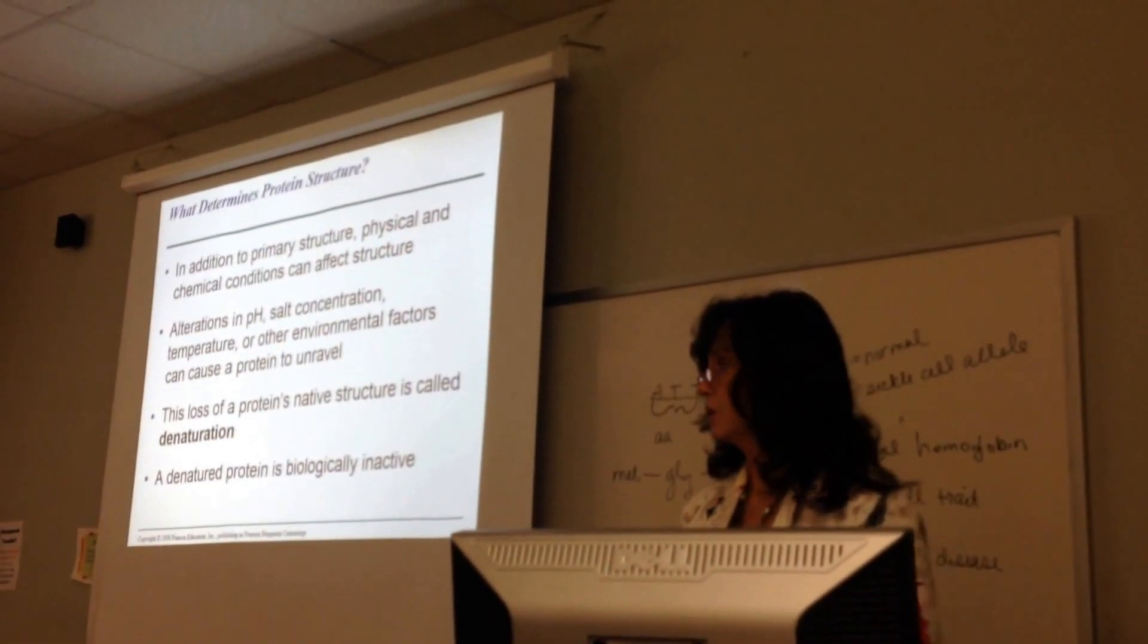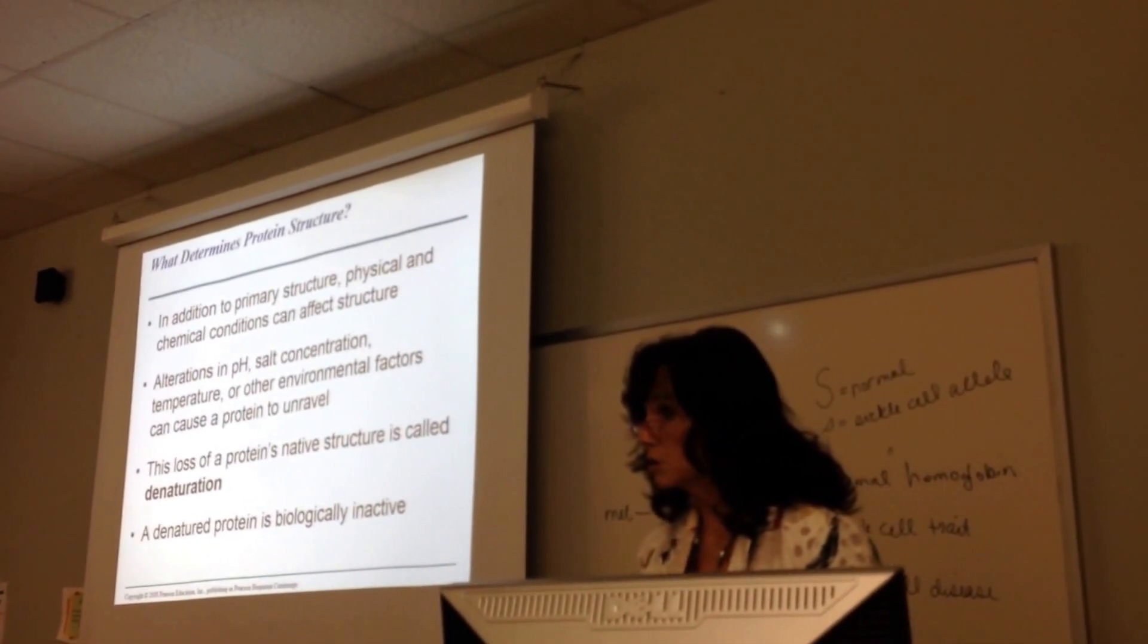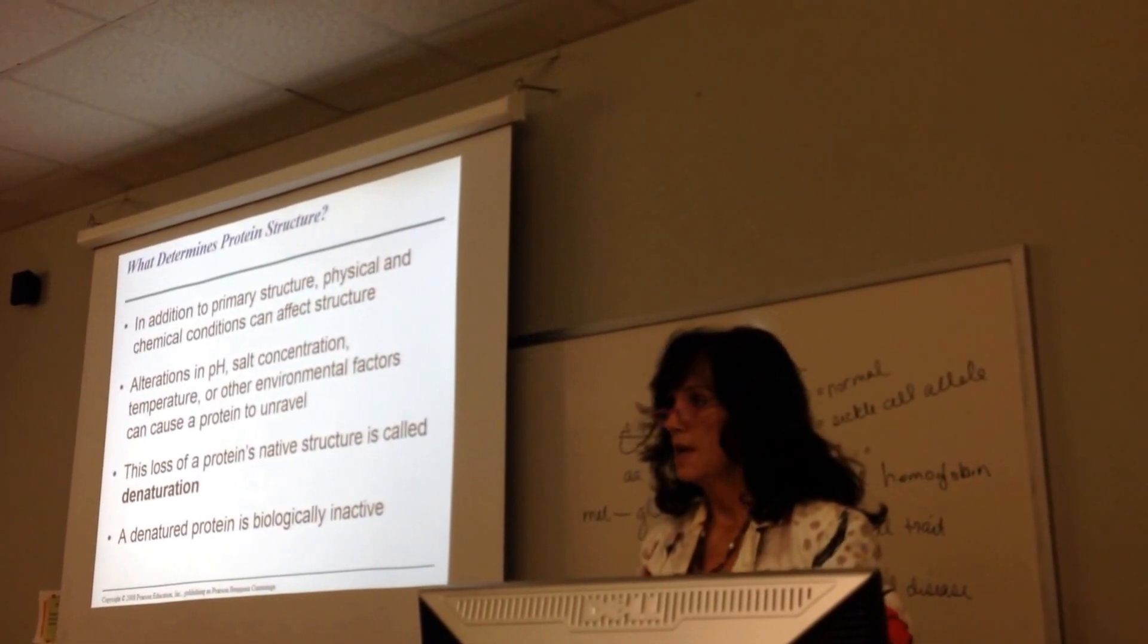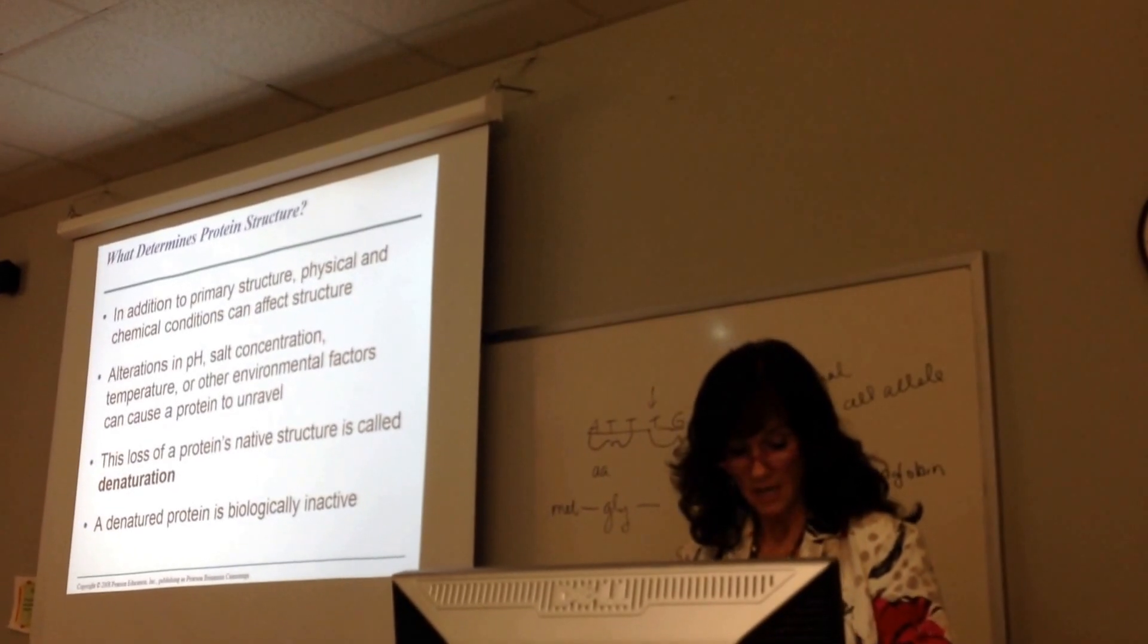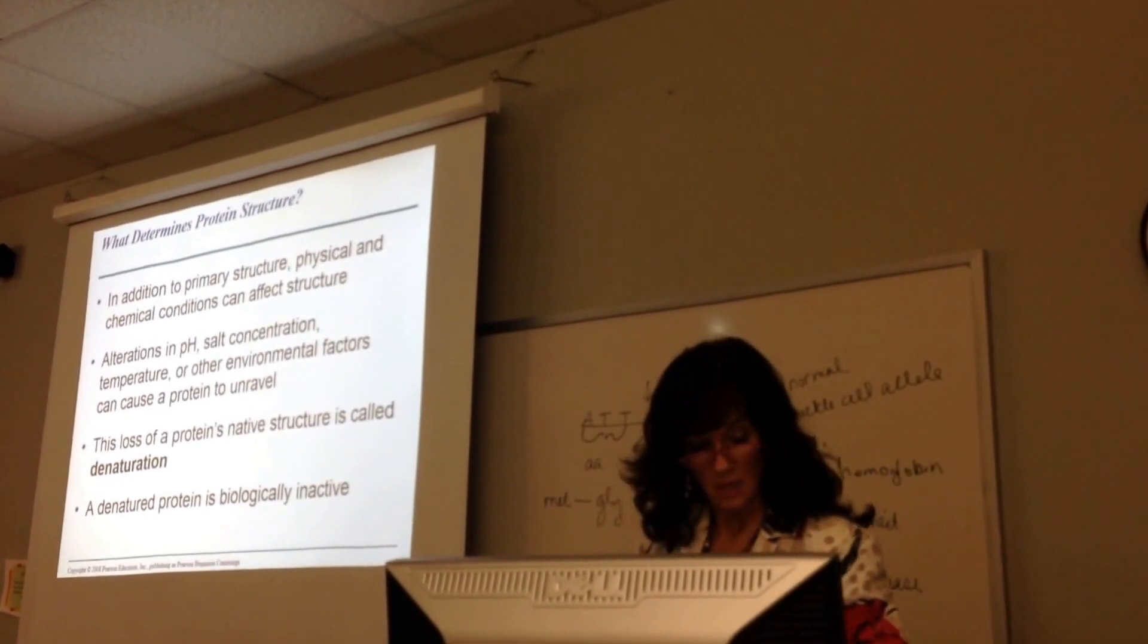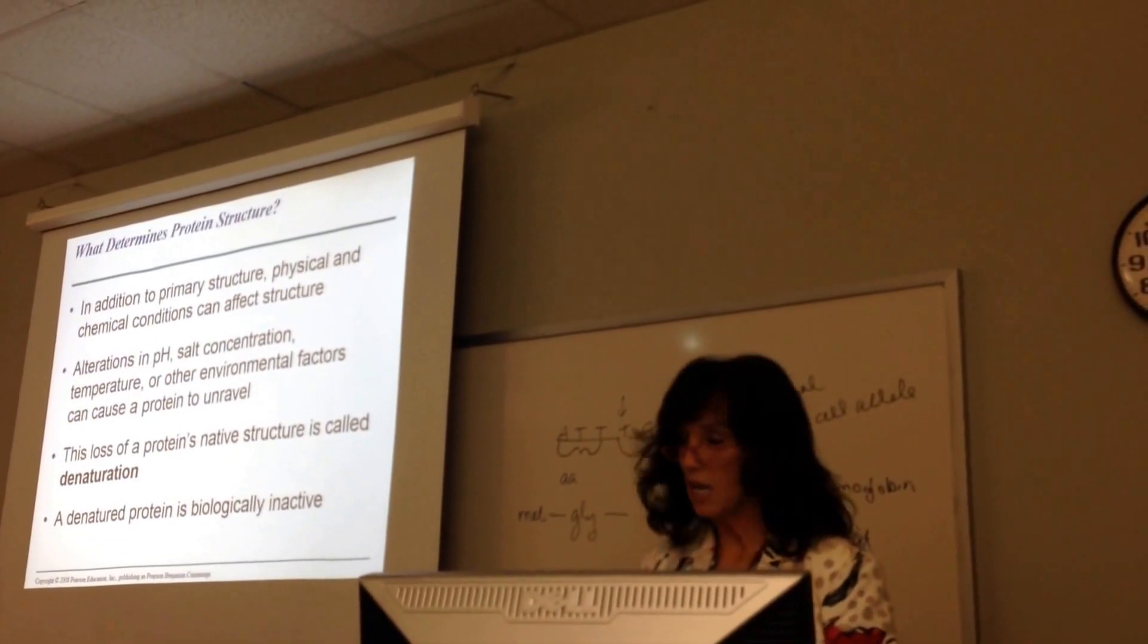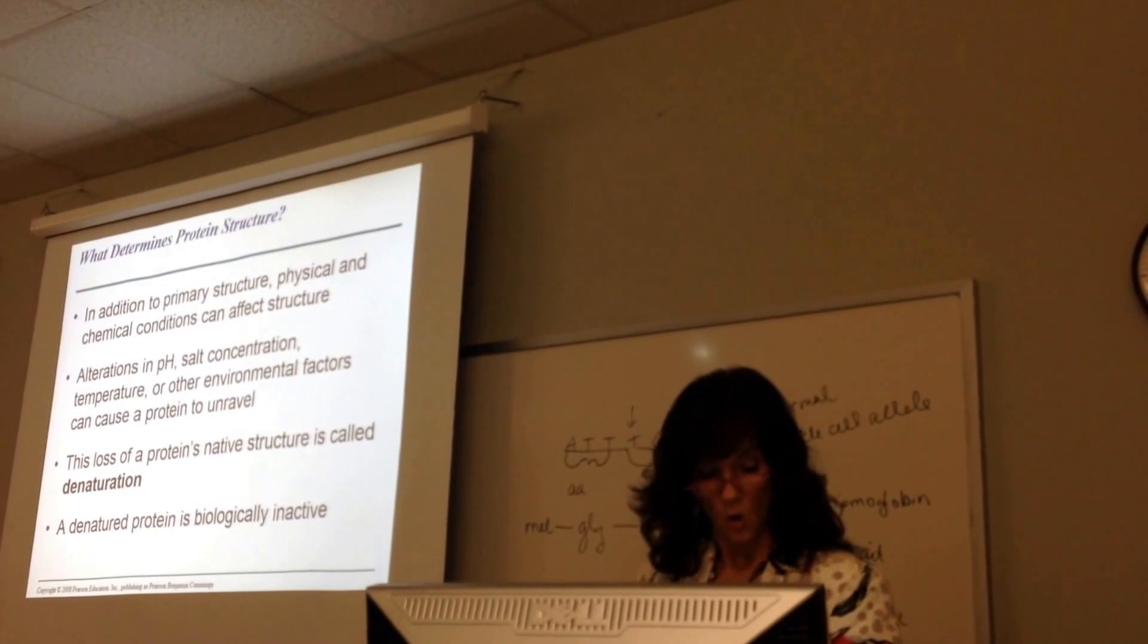It comes unglued. If you have a change in pH, if you have high temperature, you know what high temperature is going to do? It's going to start breaking those bonds. If that happens, we call that denaturation. Denaturation is when the protein unravels and loses its native shape due to change in pH, change in salt concentration, or the temperature.